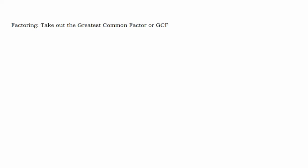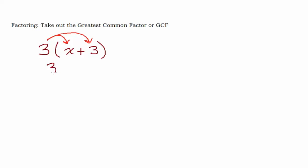In this video, we're going to cover a skill called taking out the greatest common factor. To give you a scenario where this is going to make sense, let's tie it to a skill you should already know. Let's say I ask you to distribute 3 into the binomial x plus 3. We take 3 times x and 3 times 3, and we end up with 3x plus 9. So this is multiplying — when you distribute, you're multiplying.